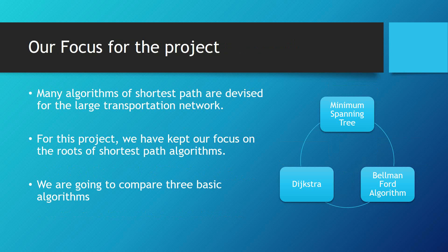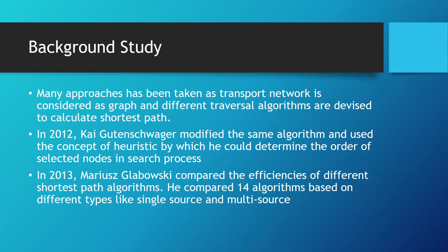Our main focus in this project is on different shortest path algorithms — the basic ones like Bellman-Ford and Dijkstra — and how to cover all the transportation network through graph purposes, probably through minimum spanning tree. I am also going to compare the Dijkstra algorithm with Bellman-Ford on the basis of time evaluation for different numbers of nodes. There is a lot of work being done in this stream; transportation networks are considered as graphs and different traversal algorithms are devised to calculate the shortest path.